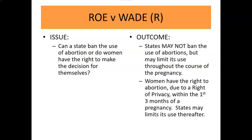In Roe v. Wade, the issue is: can a state ban abortion, or do women have a right to make decisions for themselves due to the right of privacy? It came out in a seven-to-two decision that states may not ban abortions totally. But as the pregnancy goes on, they may limit it more and more. In the first trimester, women may have abortions on demand. Through months four through six, they may be placed on limits like a 48-hour waiting period or required viewings. In the third trimester, seven through nine, abortions are only allowed if the woman's life is in danger. Women do have a right to abortion through these different stages, and states may limit it.